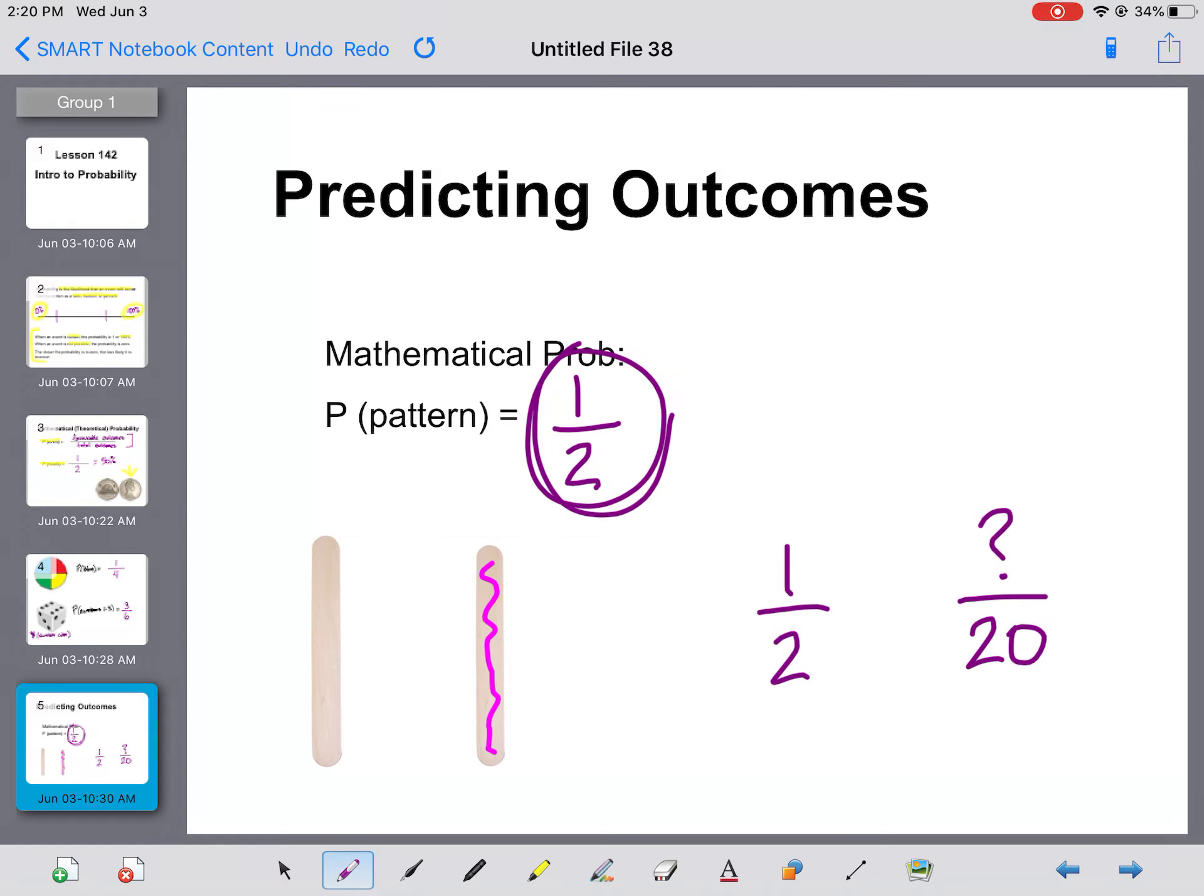So you can think of it like we've done before with proportions, just like an equivalent fraction. This was being multiplied by 10, this was being multiplied by 10, so...